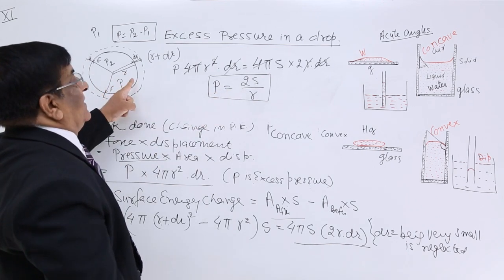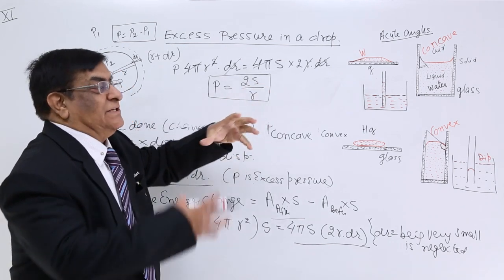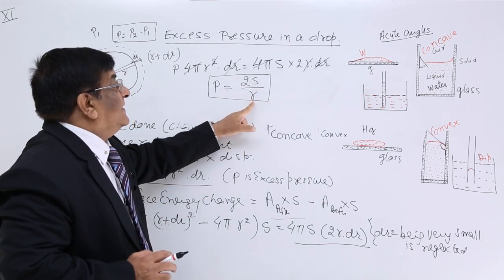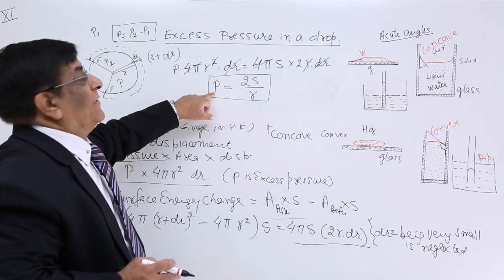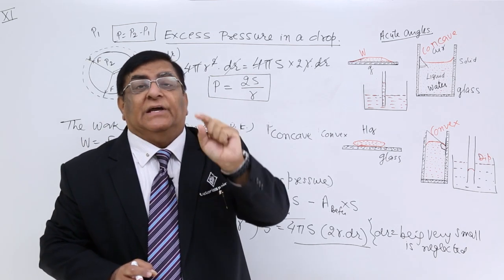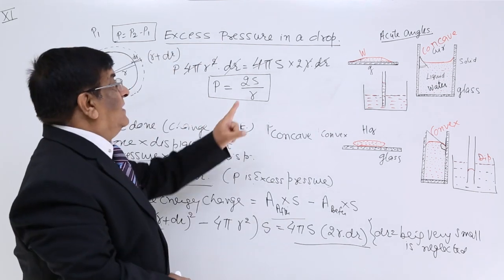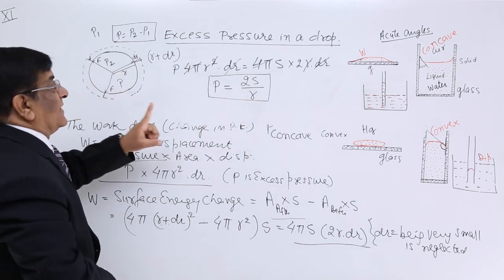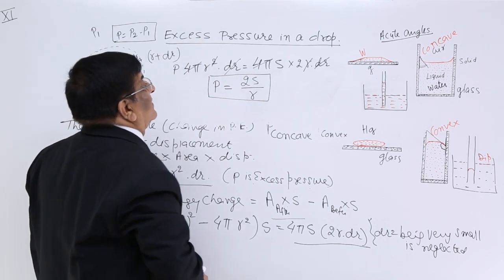So this is not zero — there is excess pressure inside a drop. This excess pressure depends on two quantities: how much is the surface tension, and how small is the radius. Smaller radius means more curvature and more pressure. So in a smaller drop, the excess pressure is more. Inside is always larger pressure than outside. This is the excess pressure in a drop — please remember this.